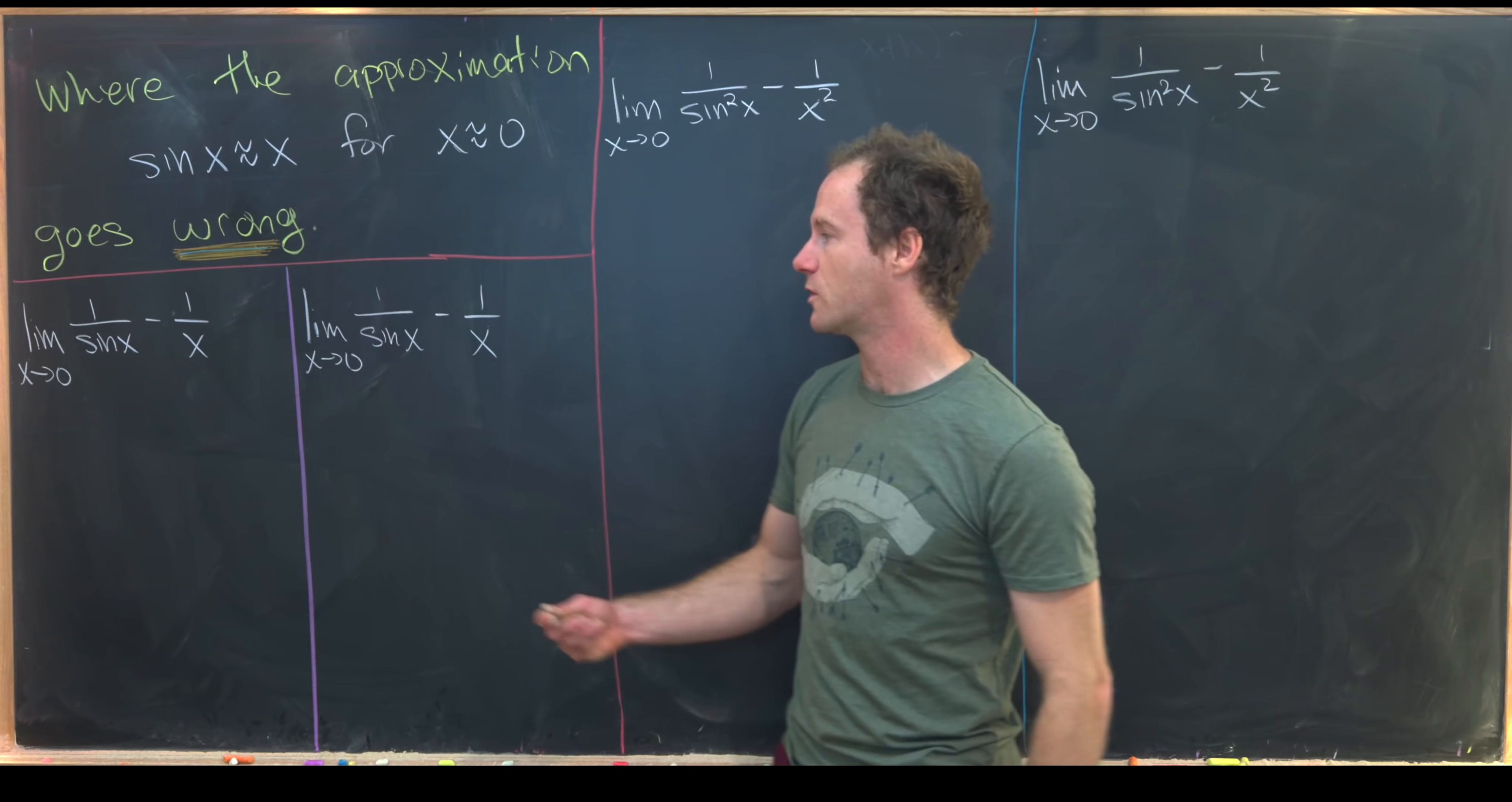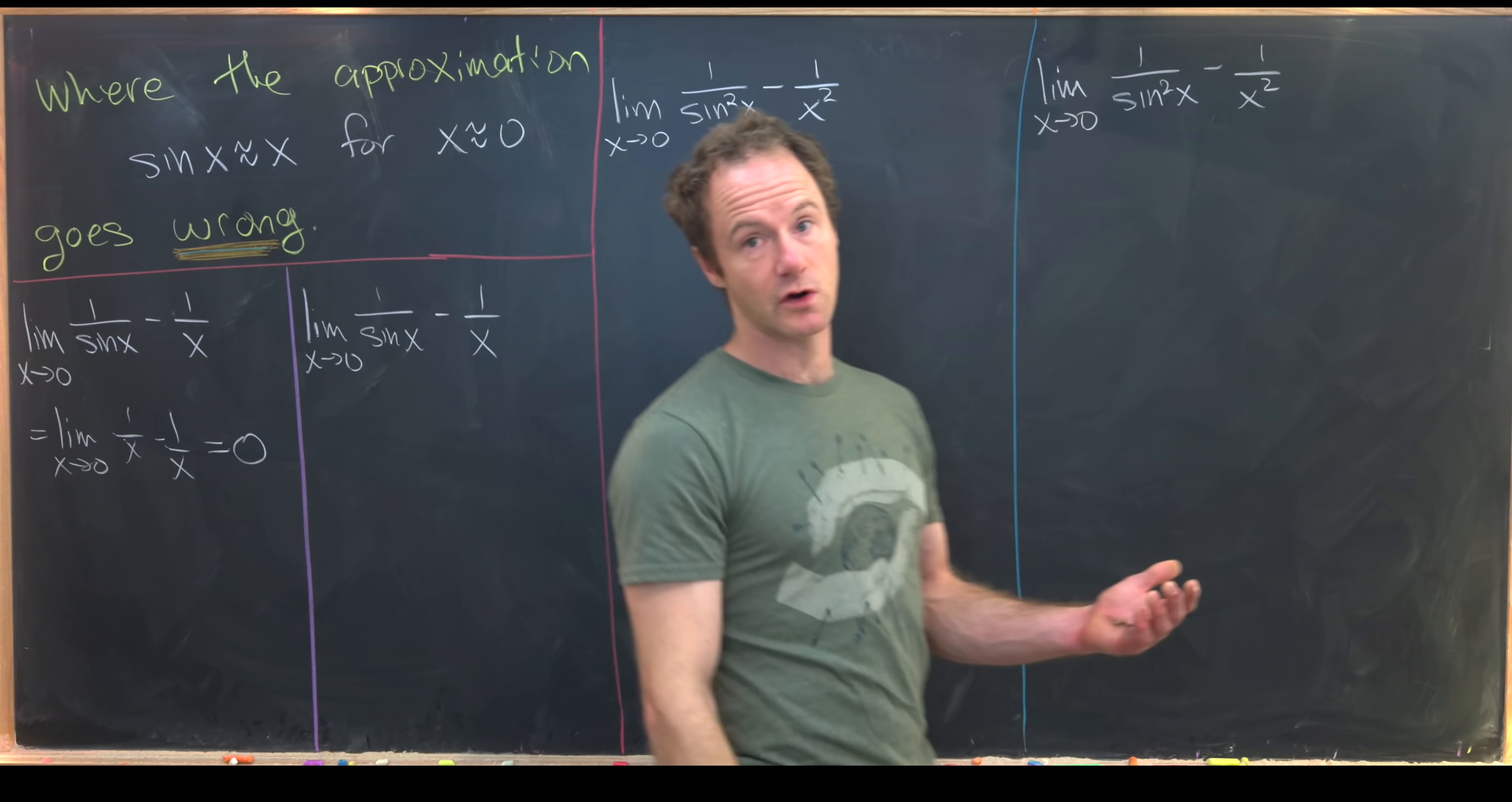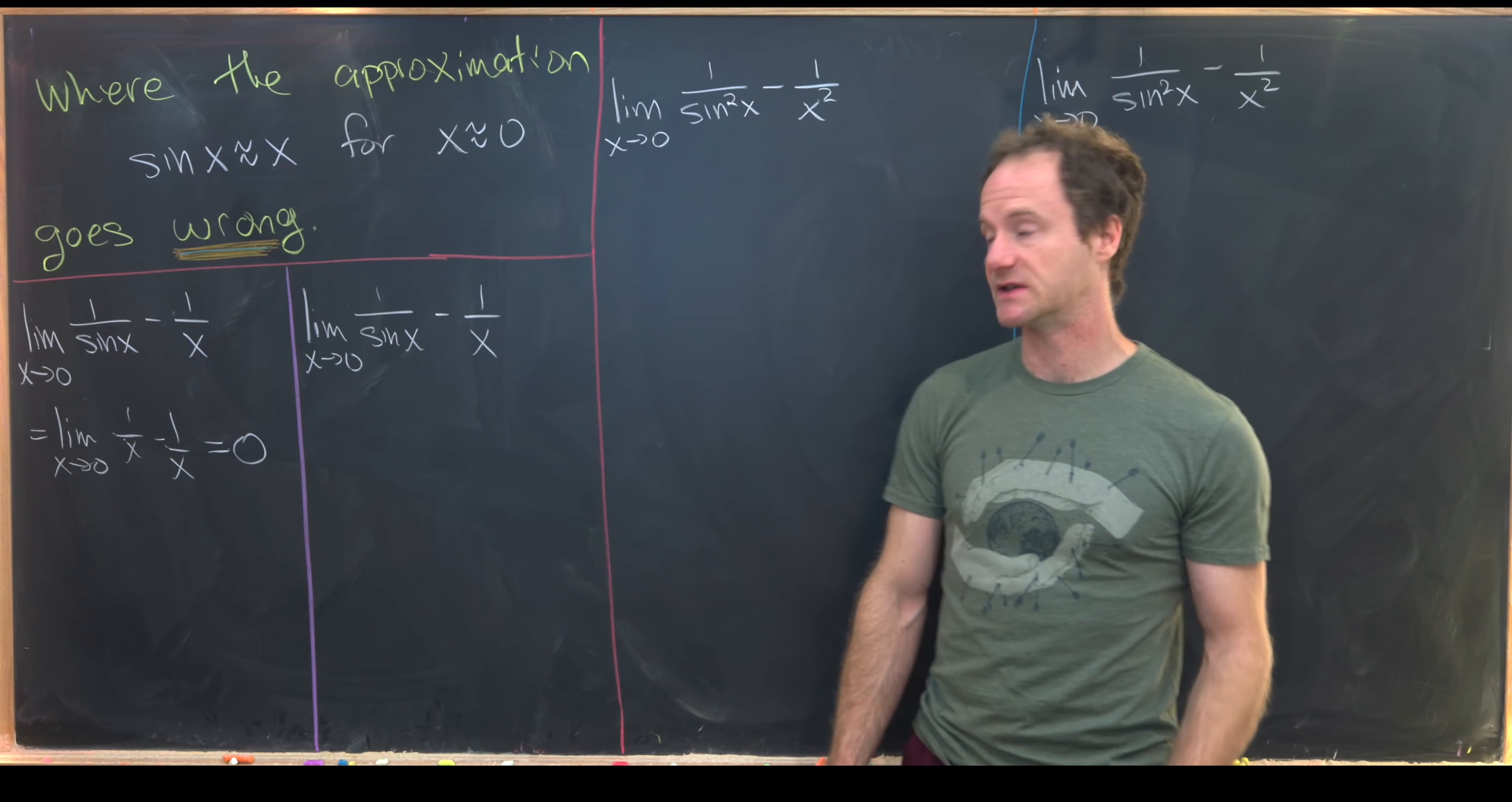Okay, so we've got this limit of 1 over sine x minus 1 over x. So using the approximation, this is quite quick. So we've got the limit as x goes to zero of 1 over x minus 1 over x, which equals zero. That's because 1 over x minus 1 over x is identically zero. Then when you start taking the limit, you just will get zero.